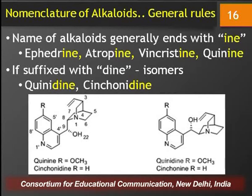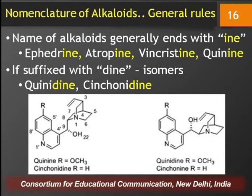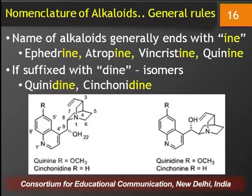If the alkaloids are suffixed with -dine, that indicates the alkaloid is an isomer of the parent alkaloid. Examples are quinidine and cinchonidine, since both end with -dine. Quinidine is an isomer of quinine, whereas cinchonidine is an isomer of cinchonine, and all four alkaloids — quinine, quinidine, cinchonine and cinchonidine — are found in the bark of Cinchona species. Quinine is largely used as an anti-malarial drug whereas its isomer quinidine is used as an anti-arrhythmic agent, and the only difference in their structure is the positioning of the hydroxyl group at position 22.